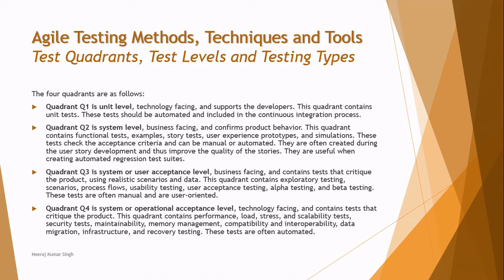Let's look at the four quadrants. The first quadrant is about unit level testing and is technology facing, where unit tests are performed as part of the continuous integration process and basic functionalities of the product are validated — this is done by the developers.